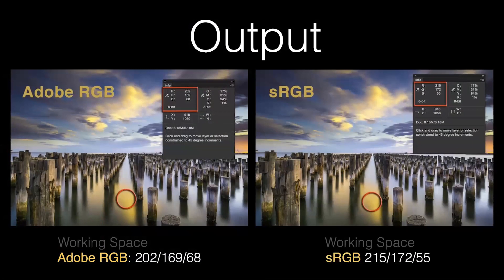Let's look at the final step of the colour managed workflow. We've captured the images, we've graded the images, now we're outputting the images. Lightroom will always look after you because it embeds the colour profile you're using on export. Typically it will embed an sRGB profile by default, which is a safe one, but you could override that and go out with an Adobe RGB profile instead. The danger is some software doesn't embed the profiles — and two files which should appear identical can actually have different RGB numbers, which are meaningless unless we also have the colour space as their map reference.